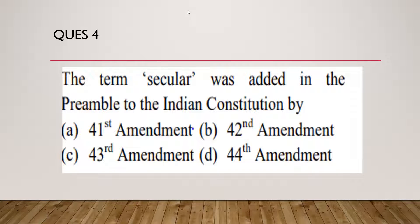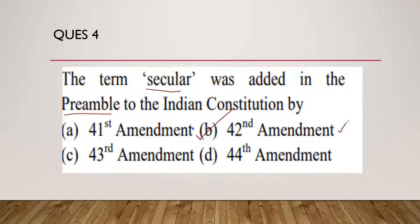Question number four: the term 'secular' was added in the preamble to the Indian Constitution by the 42nd Amendment. The preamble has only been amended one time, and that was by the 42nd Amendment Act of 1976. In that Act, four words were added to the preamble: 'secular', 'socialist', and 'integrity'. The word 'integrity' was added in the last paragraph of the preamble alongside 'unity' — prior to the 42nd Amendment it was only 'unity of the nation', and now it reads 'unity and integrity of the nation'.